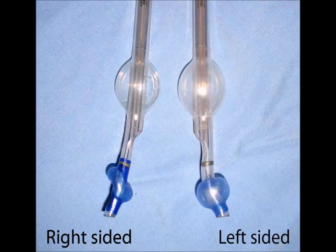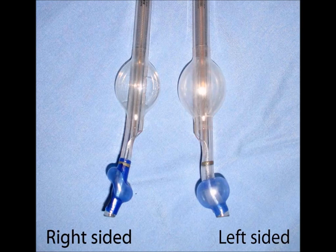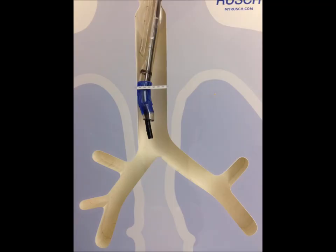Here are the two tubes next to each other. They both have tracheal cuffs. That's always the tracheal port comes off medially here. And then here's the regular round left endobronchial cuff that we use often.